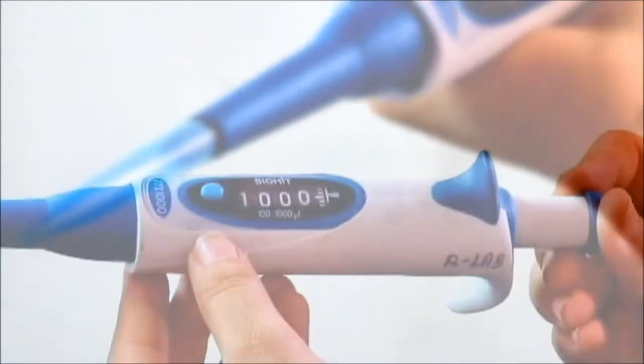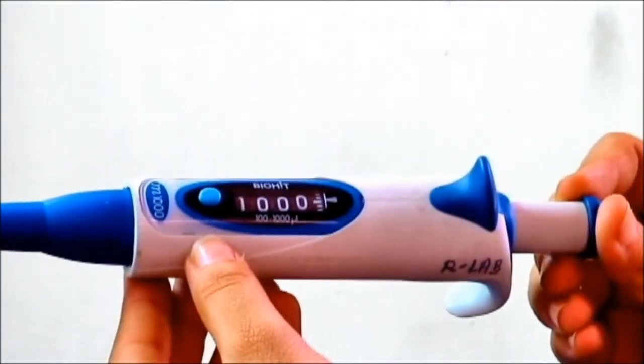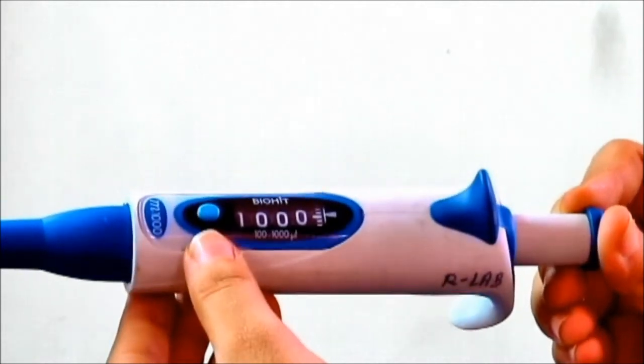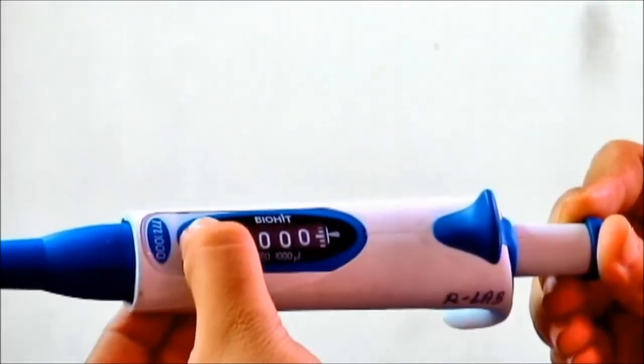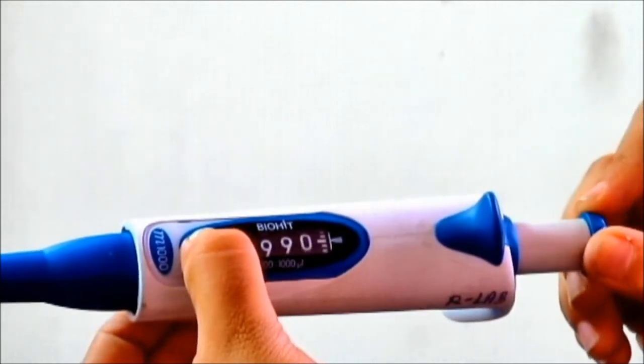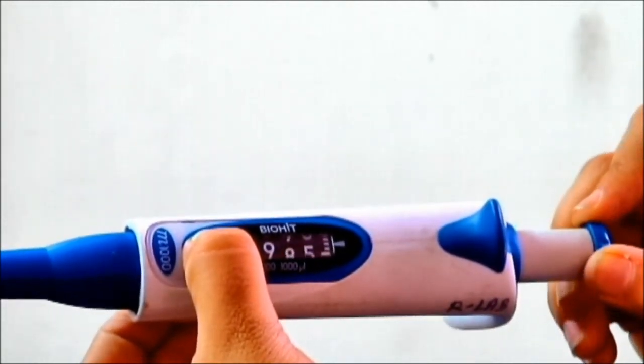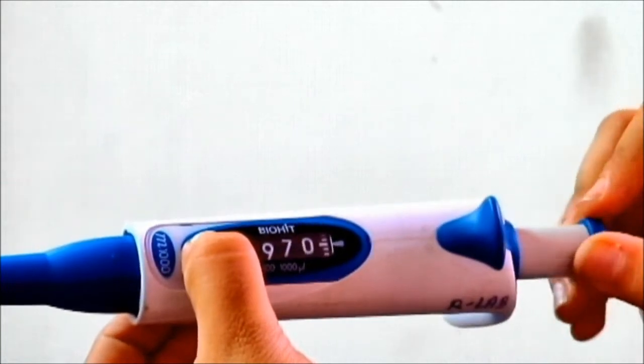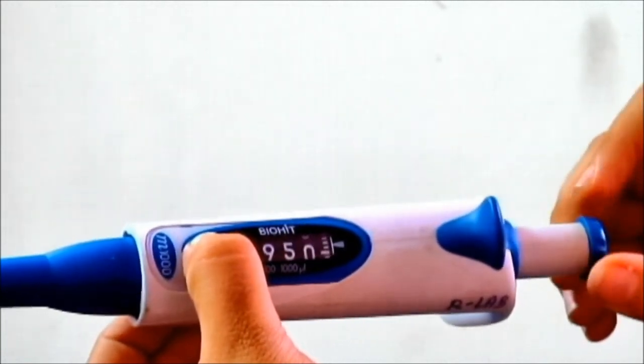In order to adjust the volume of liquid to be drawn, the button present near the digital volume indicator is pressed and simultaneously the volume adjustment knob is rotated to adjust the required volume and the button is then released.